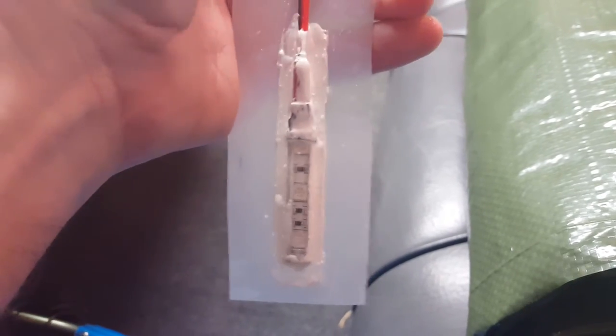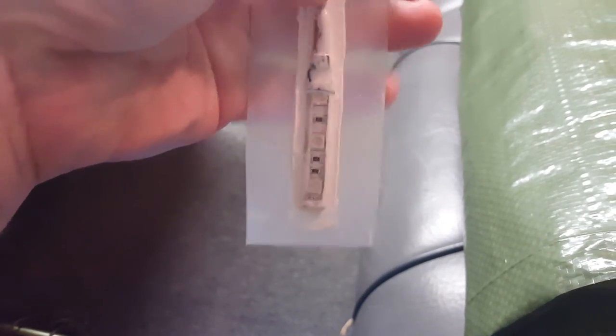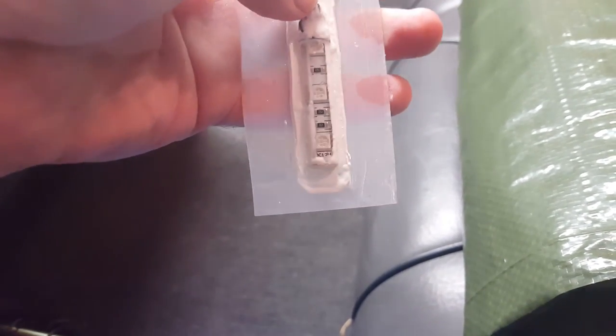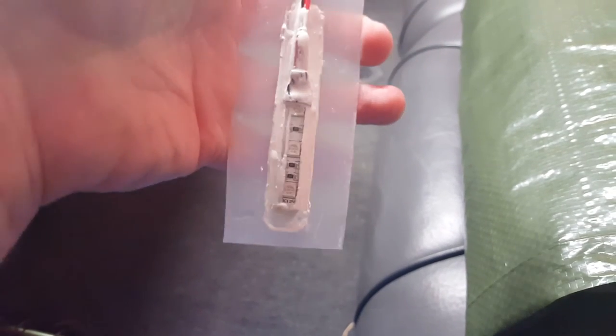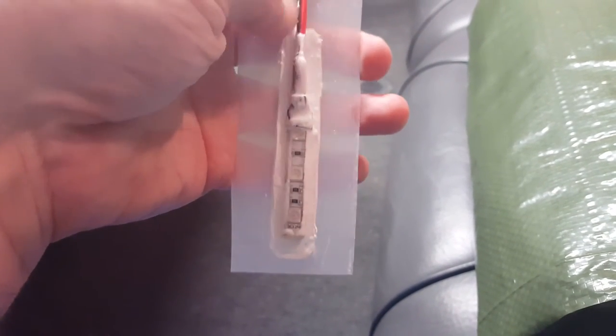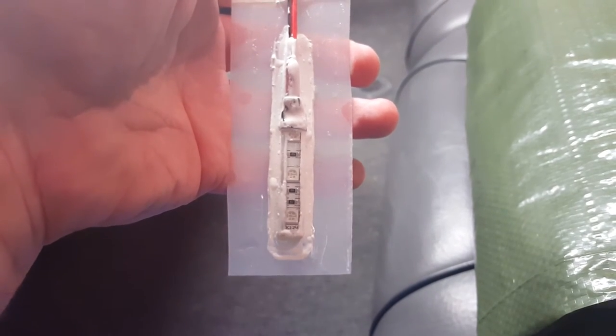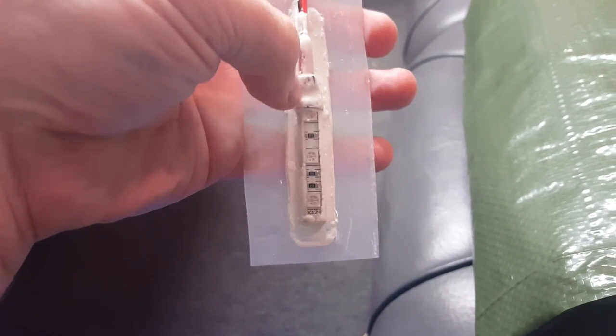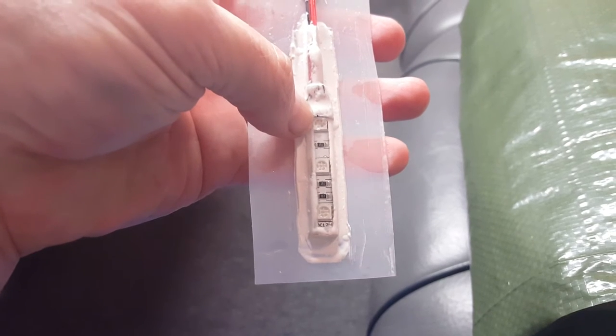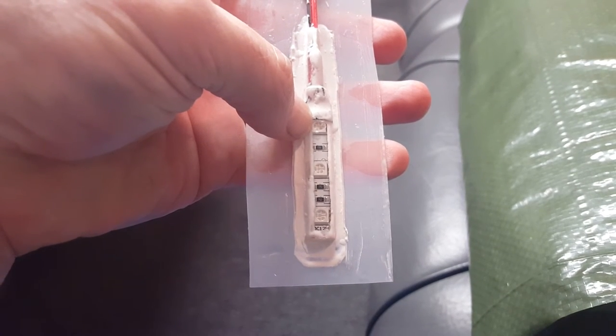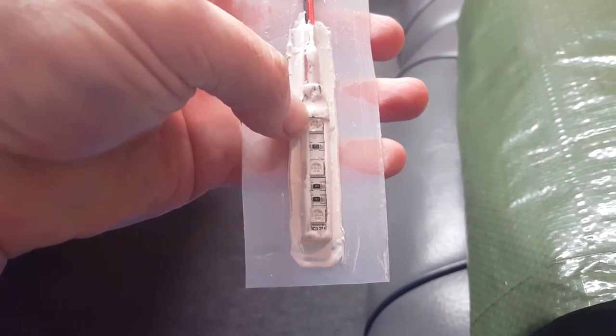If you mask off the area like I've done here where you want your sealant, you can get something that looks fairly clean. Another trick is to mask off the very front edge of your LED light strip so that you don't get any sealant over the top of the lights.